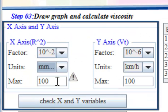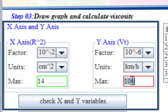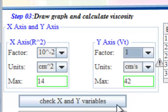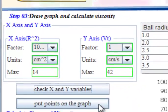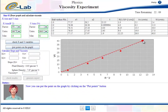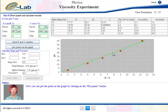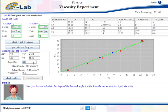First, you adjust your units and factors and the maximum value of each axis, then click Check X and Y Values button. Click Put Points on the Graph button. Start to drag a line in the graph to be the slope, correct line will be with a green color.